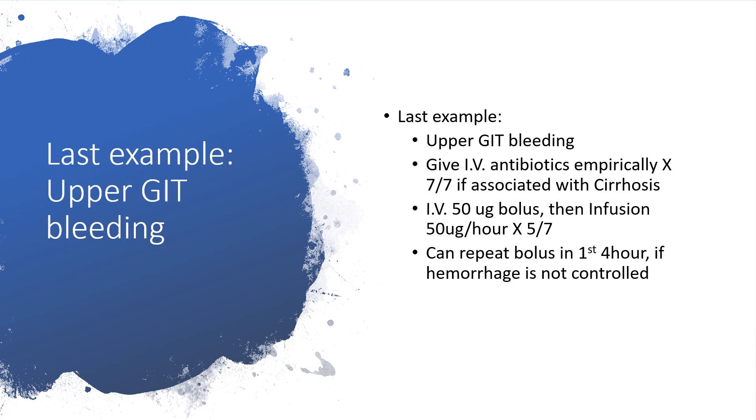For upper gastrointestinal bleeding or hematemesis, you can give intravenous antibiotics empirically for 7 days if dealing with alcoholic cirrhosis. Also give Octreotide 50 mcg bolus, then continue infusion at 50 mcg per hour for the next 5 days. You can repeat bolus in the first 4 hours if hemorrhage is not controlled.